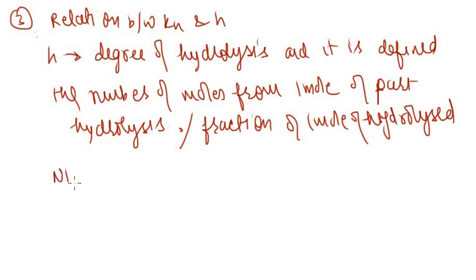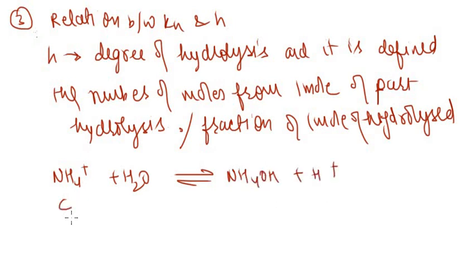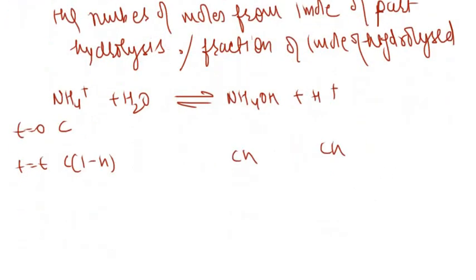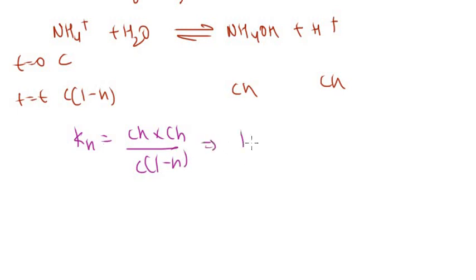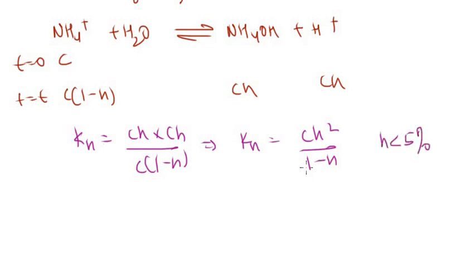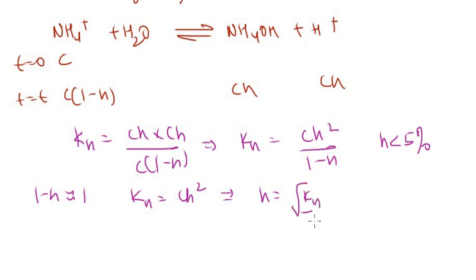Writing the ICE table for NH4⁺ + H2O → NH4OH + H⁺: initially C, 0, 0; at equilibrium C(1−H), CH, CH. So KH = [NH4OH][H⁺] / [NH4⁺] = (CH)(CH) / C(1−H) = CH² / (1−H). When H is less than 5%, we neglect H relative to 1, so KH ≈ CH² and therefore H = √(KH / C).